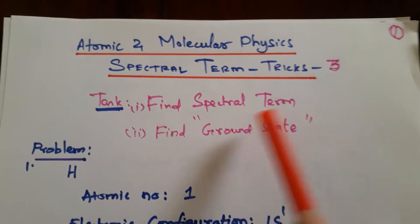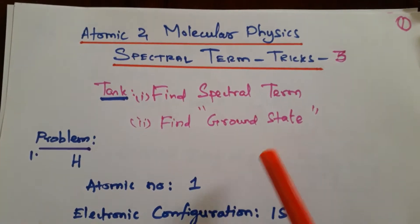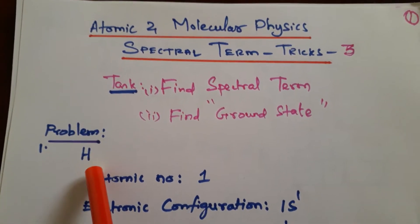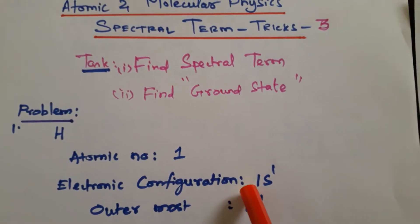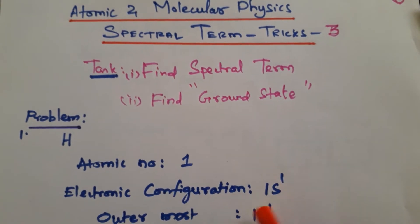We are going to find the spectral term and ground state today. We take an example, hydrogen. Atomic number is 1, electronic configuration is 1s1. Since it has only one electron, outermost is 1s1.